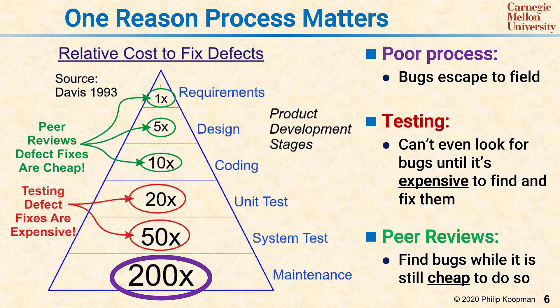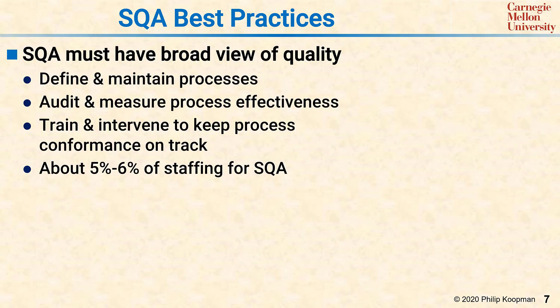SQA is how you know whether your process is actually being followed and whether it's being effective at finding problems when they're cheap and easy to fix instead of expensive. SQA must have a broad view of quality — it defines and maintains the processes, audits their execution, and measures the effectiveness of the process at ensuring high quality software. SQA also trains and intervenes to keep the process on track. Doing this takes about 5% to 6% of the total staffing of the project — about half of that, 2% to 3%, is for defining, maintaining, and training on the process, and about half is for audit and root cause analysis to fix the process. For a 10-person project, one person half-time should be doing SQA; at 20 people, it's time to hire a full-time SQA specialist.